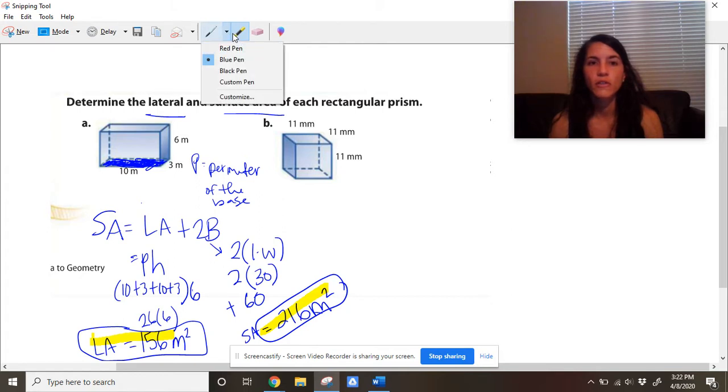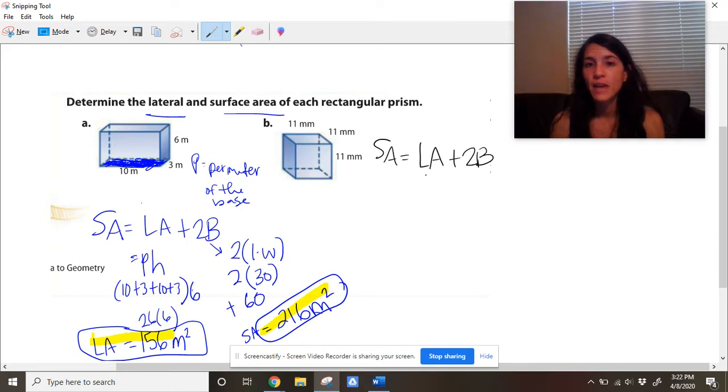So we have the lateral area right here, lateral area and total surface area. I'm going to change to black pen for B. Okay, so B is a cube. And again, to find the surface area, I need the lateral area plus twice the bases. My lateral area is P plus H. And my bases, because it's a square, is really just side squared or length times width.